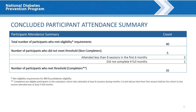Concluded Participant Attendance Summary. This section continues the process of determining which participants will be fully evaluated. It starts with the total number of eligible concluded participants — 40. The next line shows participants excluded due to not meeting attendance or time-in-program thresholds. Eligible participants must have attended at least 8 sessions in the first 6 months and have at least 9 full months from the cohort's first session to the last session attended. In this example, 5 participants are excluded, leaving 35 completers; the 5 excluded participants are considered non-completers.